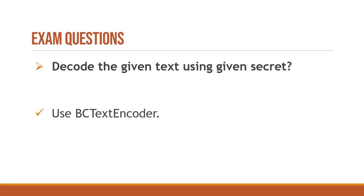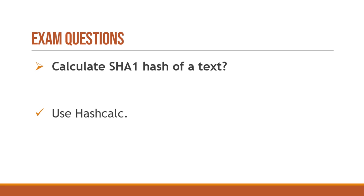Another question is to decode a given text using a given secret. You'll be provided a secret or password and need to decode the text. The tool for this is BC Text Encoder, installed on your Windows box — you provide the secret and it decodes the text for you.